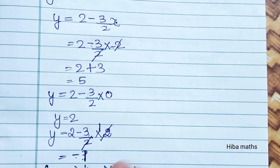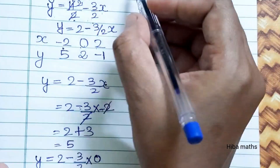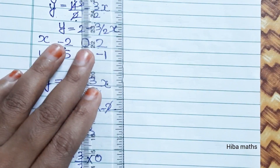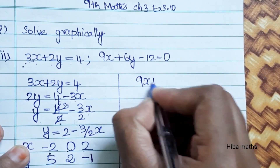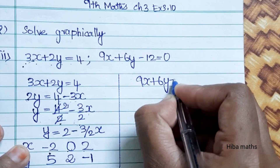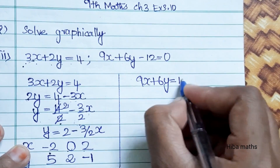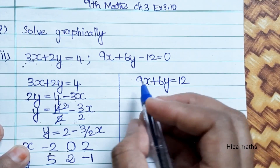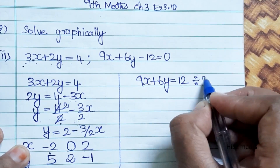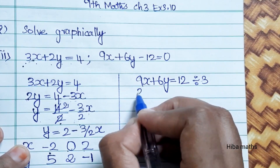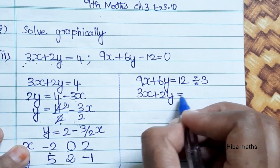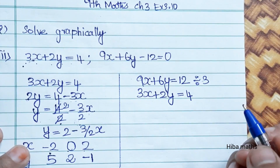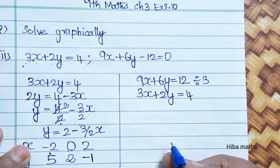Now we will solve the next question. We will simplify 9x plus 6y minus 12 by dividing all terms by 3. So 9x divided by 3 is 3x, 6y divided by 3 is 2y, and 12 divided by 3 is 4. This gives 3x plus 2y equals 4, which is easier to solve.